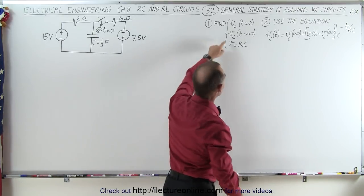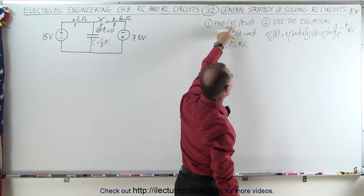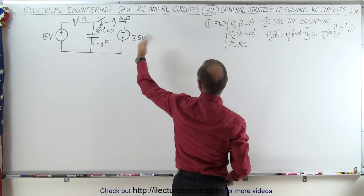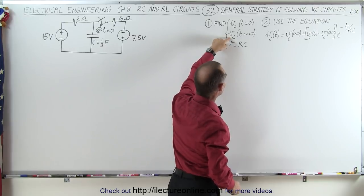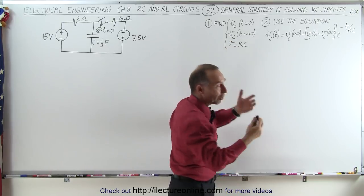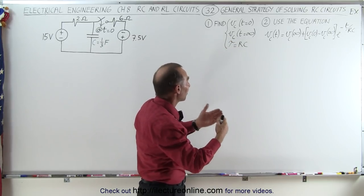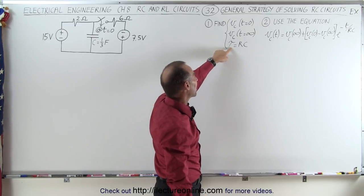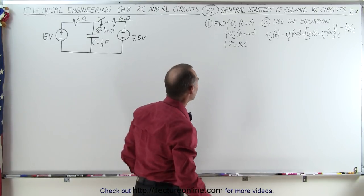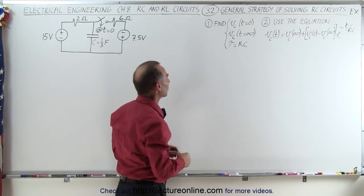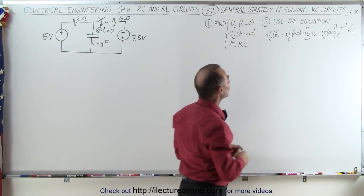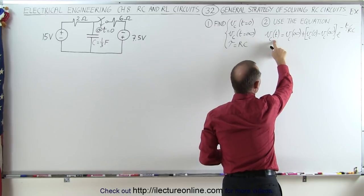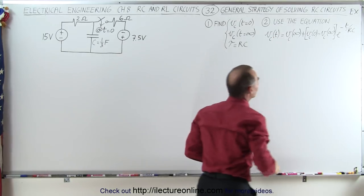The strategy is we first find the voltage of the capacitor at t equals zero — that's just before the switch closes. Then the voltage across the capacitor when a large amount of time has gone by. And we find the time constant, which is the product of the resistance and the capacitance. Then we use the equation that the voltage across the capacitor as a function of time equals these quantities.